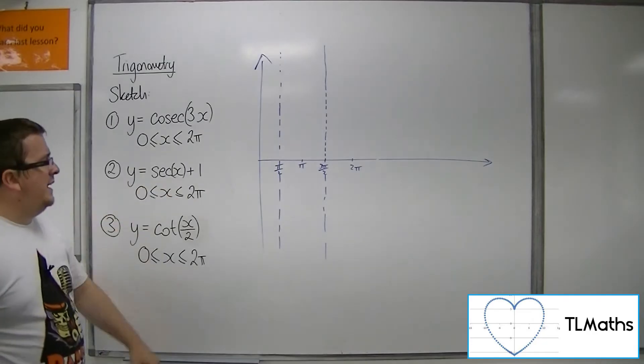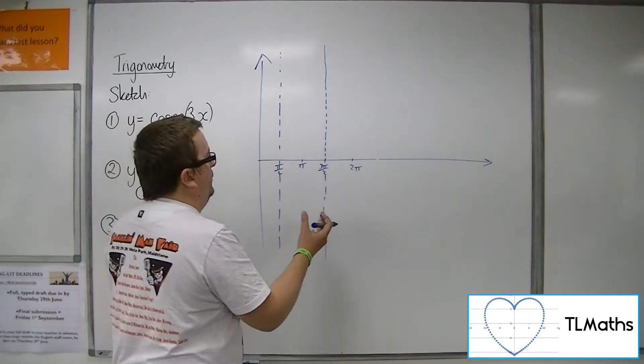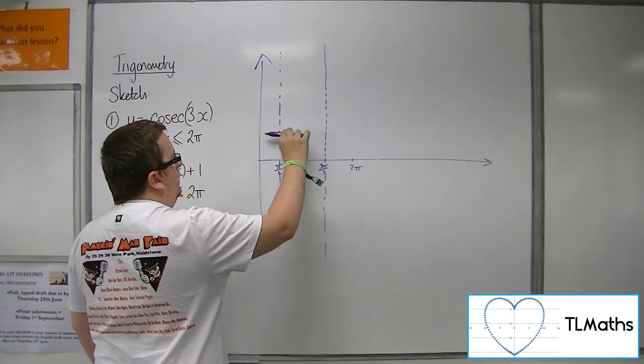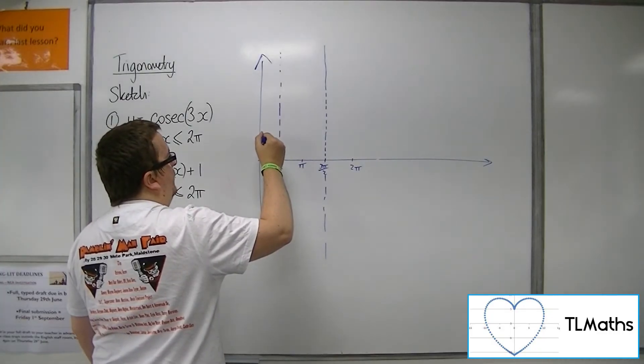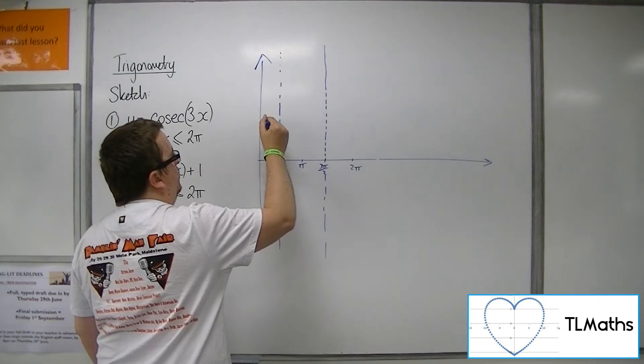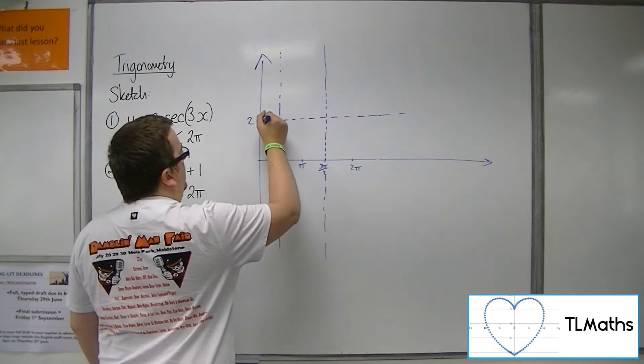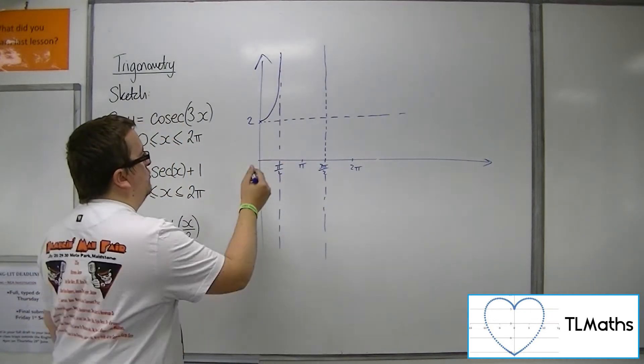So then, now because sec x plus 1, that's shifting the whole graph up 1. So we're going to have, because we've got that curve that comes like this at 1, we're going to have to be at 2. So the curve must start there and go up like that when we're at 0.